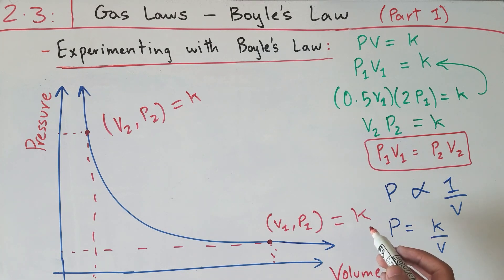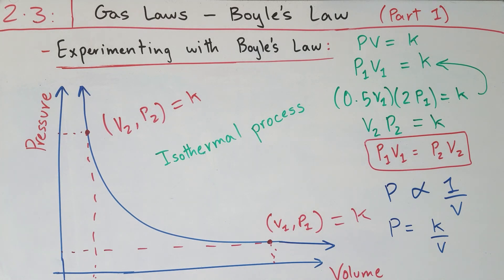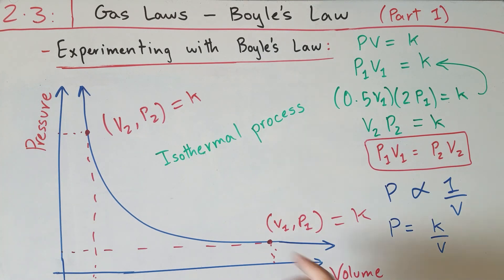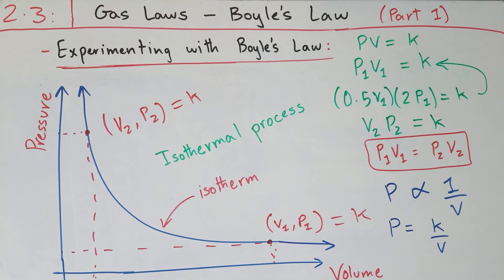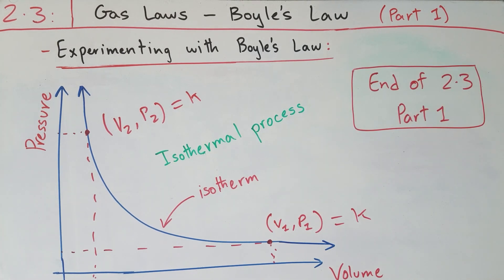This compression is known as an isothermal process. 'Iso' means the same and 'thermal' relates to temperature, so this is a same-temperature process — the temperature of the gas is the same in both cases. Note that k is not the temperature itself. There's also a term for this type of graph where pressure is inversely proportional to volume: it's called an isotherm.